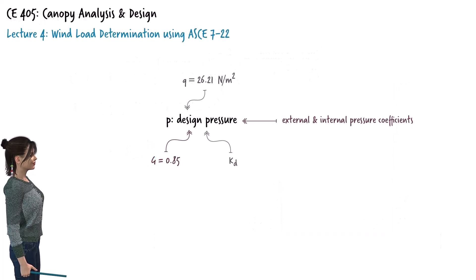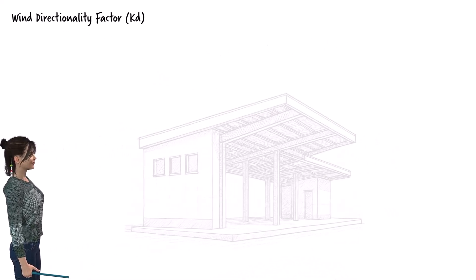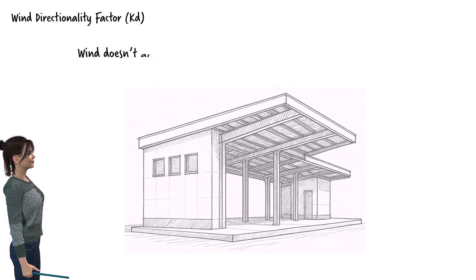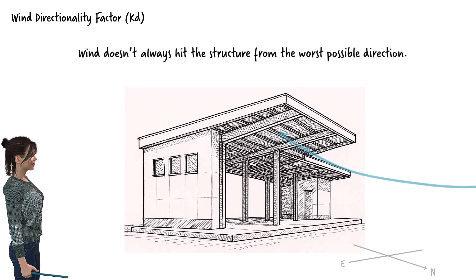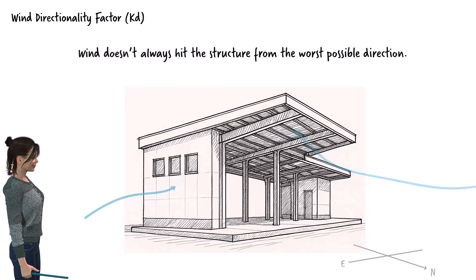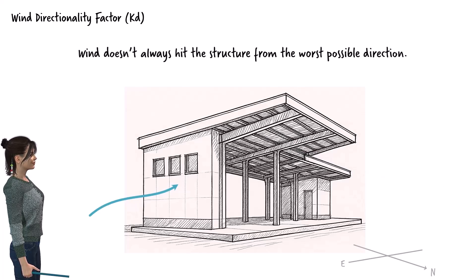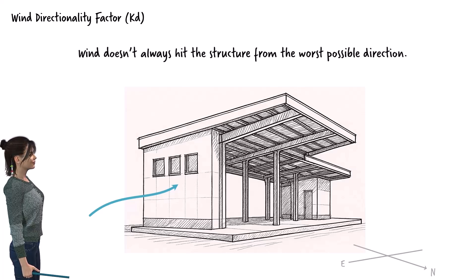Now that we have determined the gust effect factor, let's turn our attention to the wind directionality factor, KD. The idea behind this factor is simple: not every storm hits a structure from the worst possible direction. Wind can come from any angle, and most of the time it doesn't line up exactly with the direction that would create the highest force on the building. Imagine a structure most vulnerable to wind from the north — while that might be the critical direction in theory, wind in the real world may come from the east, the west, or at an angle. KD adjusts the design pressure to reflect this, reducing the load slightly.